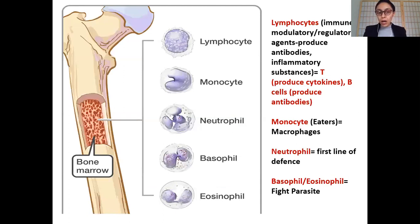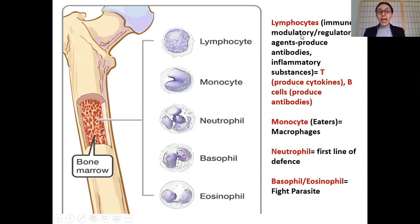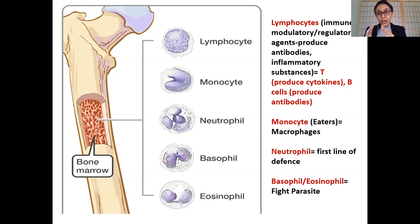Before understanding the role of inflammation in diabetes and obesity, it's important to understand the basics of your immune system. You have lymphocytes, which are immunomodulatory agents — they produce T cells and B cells. T cells produce certain cytokines: interleukin-1, interleukin-6, and tumor necrosis factor. These are the two types we'll focus on in nutrition and disease, as they are the most researched in diabetes and obesity. B cells produce antibodies.